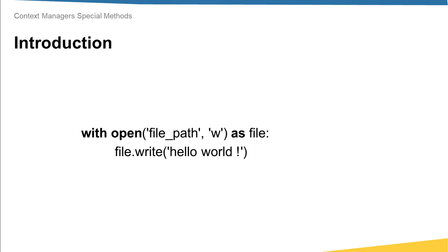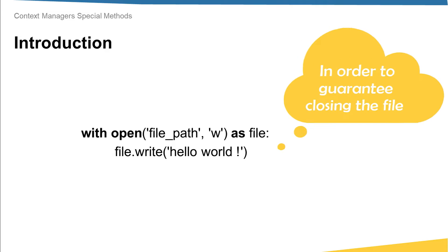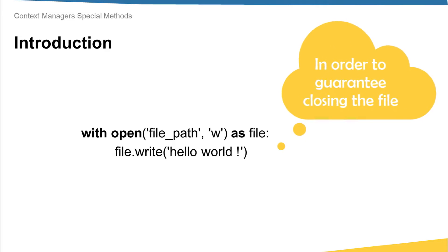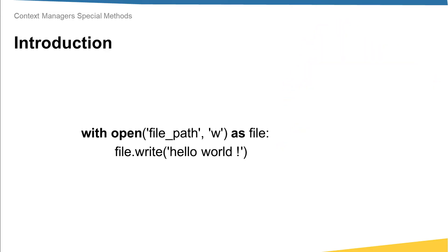We usually use the `with` keyword with files in order to guarantee closing the file after we do all the required processing, even if an error occurs while we process the file data. To learn how to make your object usable with the `with` keyword in Python, join me in this lecture.